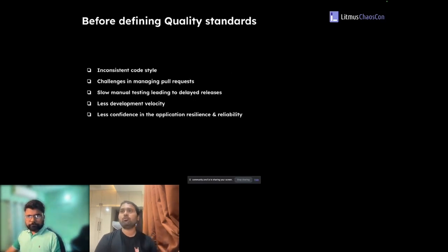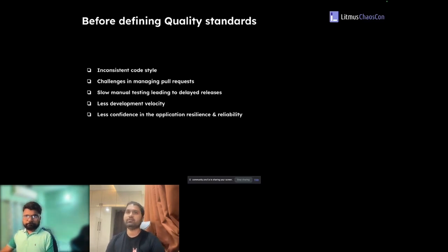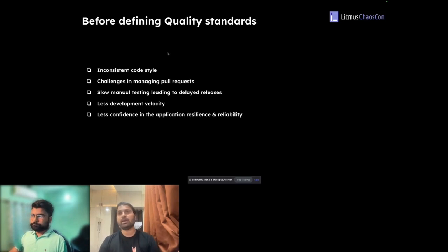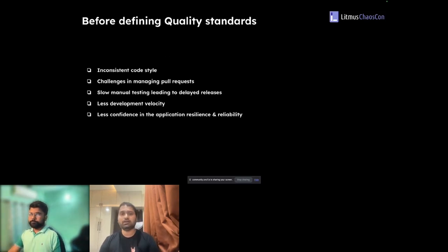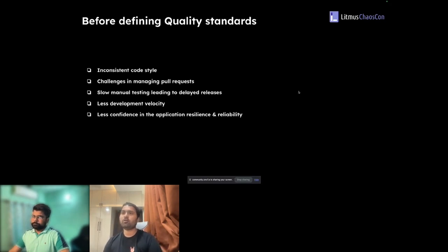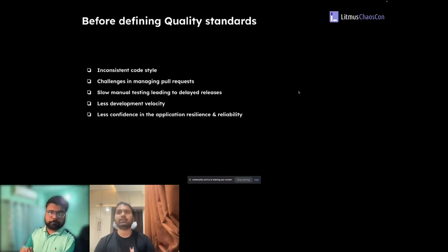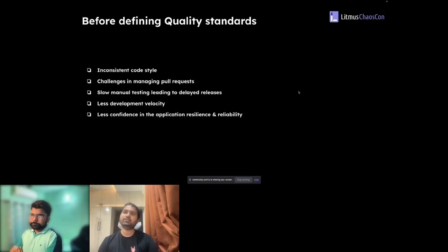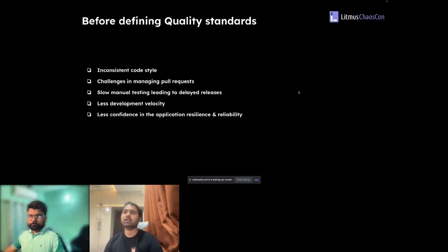Before defining the standards for quality in Litmus Chaos, we faced several challenges that impacted us in areas like application performance and development cycles. The key pain points were inconsistent code style, challenges in managing pull requests, slow manual testing, less development velocity, and less confidence in application reliability.